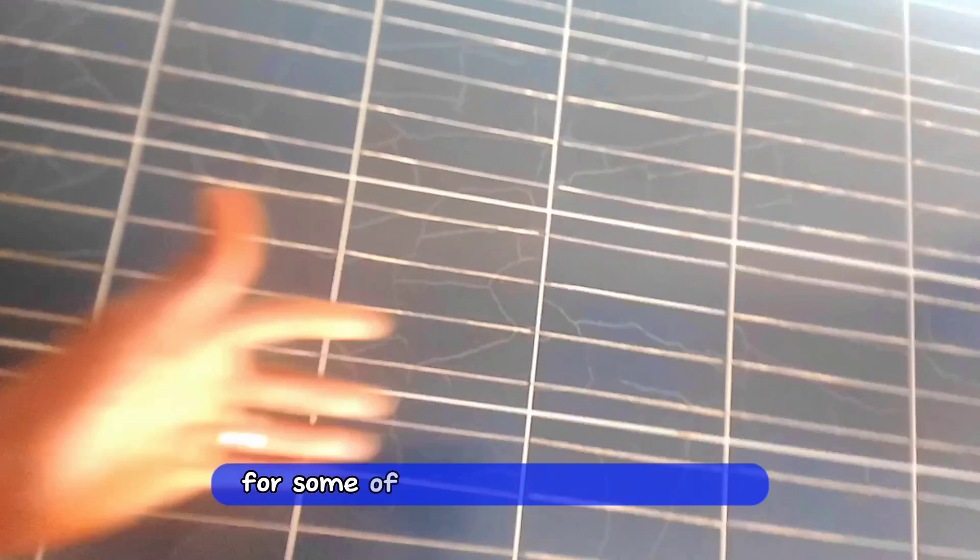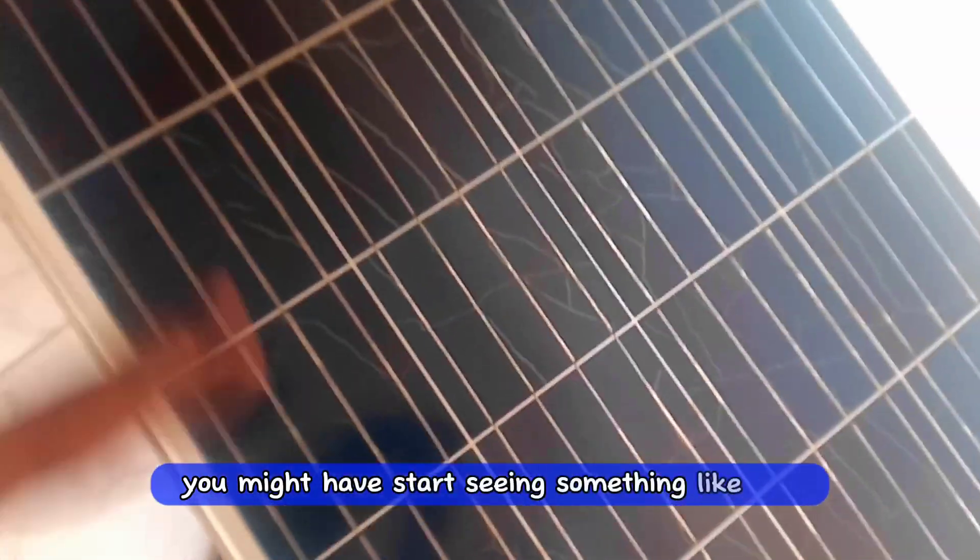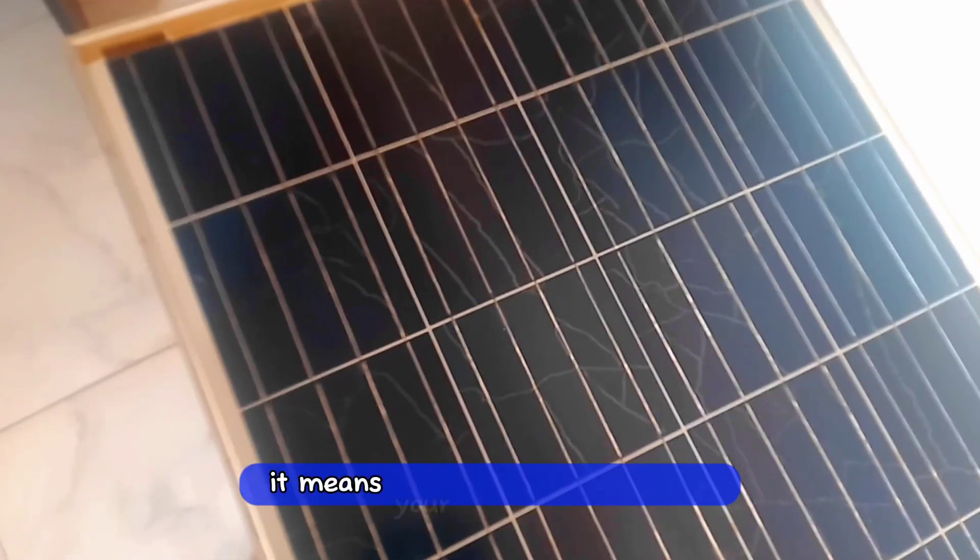You will have a lot of something like this on your panels. For some of you that have been using your solar panel for the past 8 to 10 years, you might have started seeing something like this on your solar panels. It means your solar panel is aging.